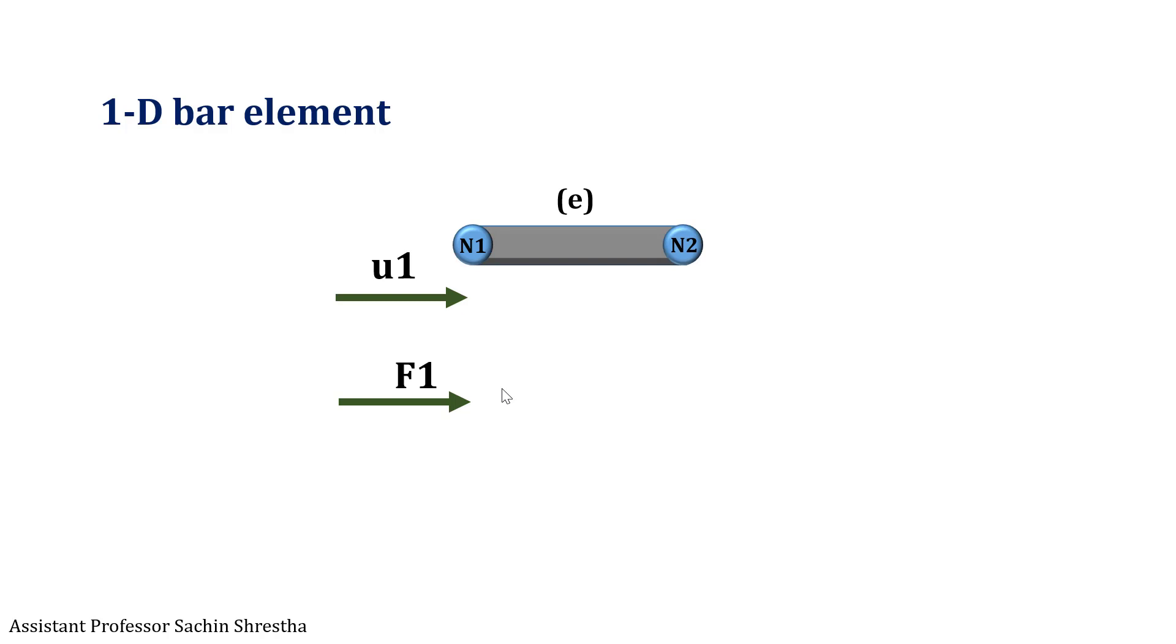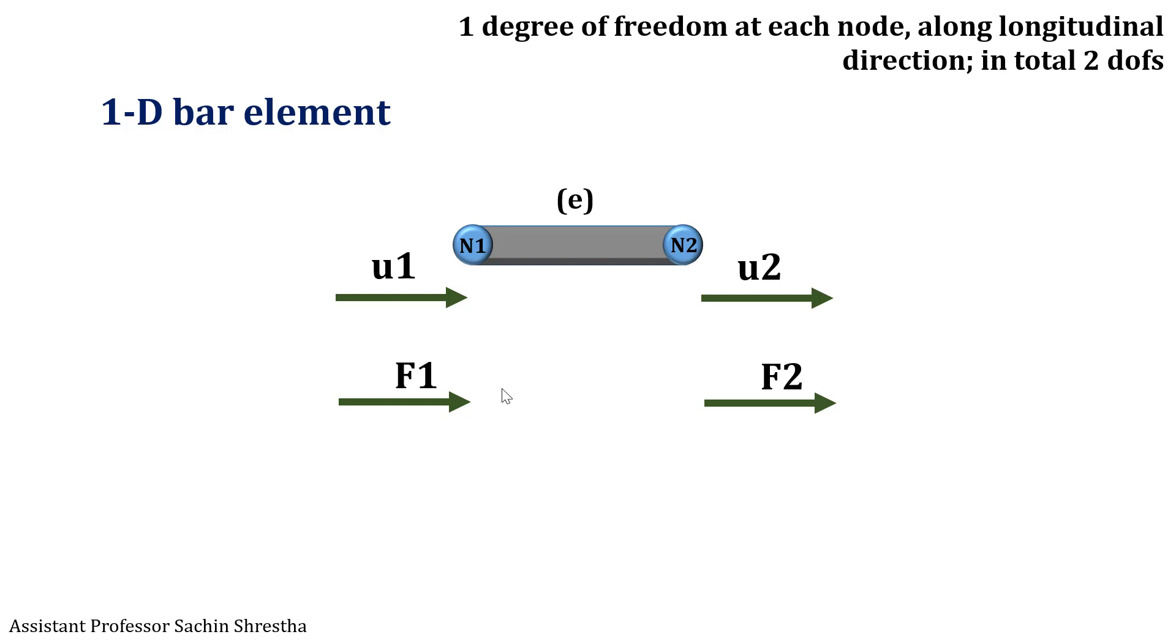At node 2 we apply the force F2 resulting in displacement U2. Here we are considering degree of freedom to be one in the longitudinal direction. Since there are two nodes, there will be two degrees of freedom.